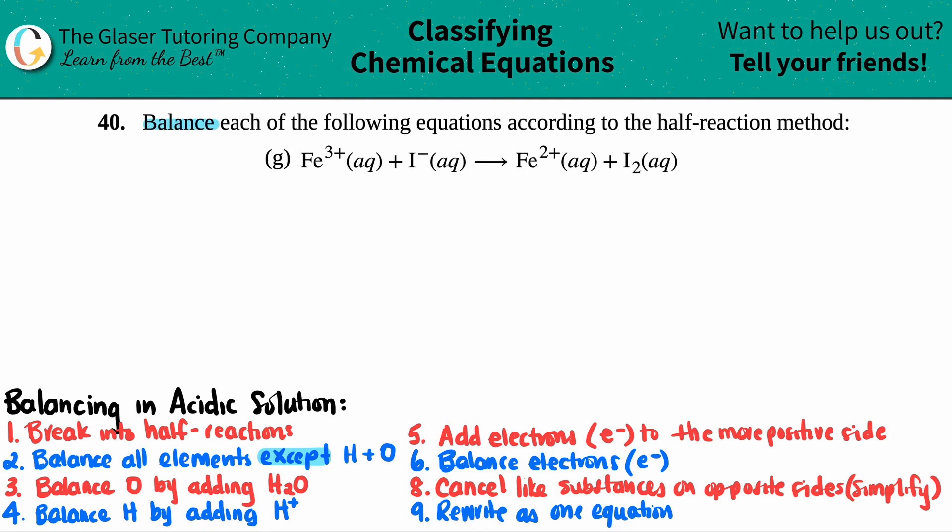Number 40. Balance each of the following equations according to the half-reaction method. And then we have letter G.